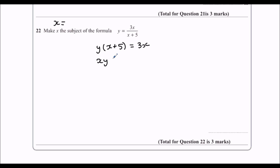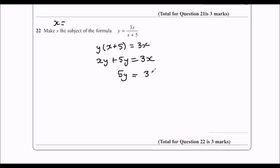x times y is xy, and y times 5 is 5y. I need to get both the x's on the same side, so I'm going to take the xy over to the right side — I'm going to minus xy from both sides, minus xy.